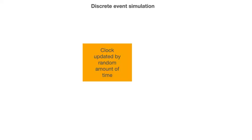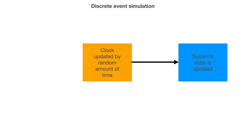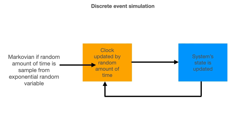To summarise, in any discrete event simulation there are two steps. The first step is to update the clock by a random amount. The second step is to then update the state of the system. The simulation data is generated by alternating between these two basic steps. Importantly, if the random amount of time between events is a sample from an exponential random variable, then the state of the system is Markovian. In many cases however, it is useful to relax the assumption of Markovianity and to generate the times between events from some other distribution. This is precisely what you are going to do in the next few exercises, which will teach you how to run your first simulations of a non-Markovian queue. Good luck with those exercises and thank you for your attention.